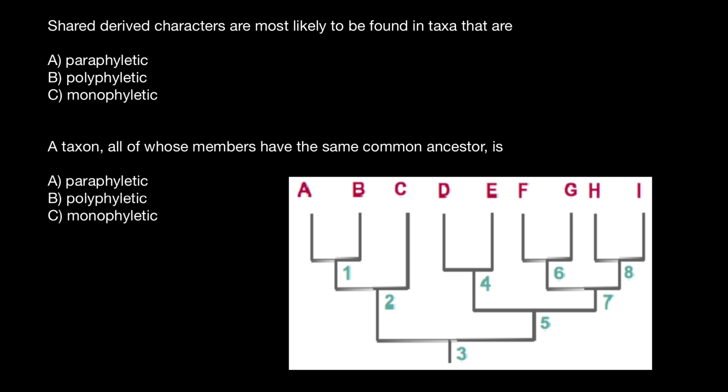The first question is: shared derived characteristics are most likely to be found in the taxa that are, and we have to choose the correct answer. And right away, second question: a taxon of all whose members have the same common ancestor is, and again, we have to choose the correct answer.